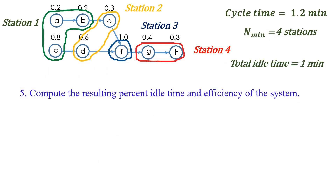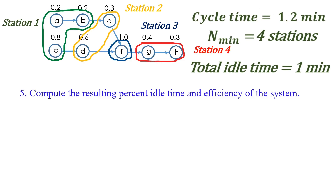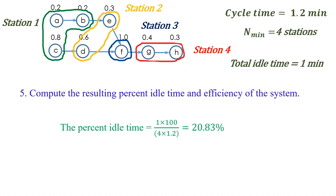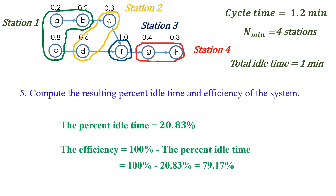The last question is to compute the resulting percent idle time and efficiency of the system. We have a total idle time of 1 minute and 4 workstations of 1.2 minutes each. So, the percent idle time equals 1 multiplied by 100 divided by (4 multiplied by 1.2), equals 20.83%. The efficiency equals 100% minus the percent idle time, equals 100% minus 20.83%, equals 79.17%. In this example, the precedence diagram was drawn, the cycle time and the minimum number of workstations were calculated, the tasks were assigned to 4 workstations, and the percent idle time and line efficiency were computed.